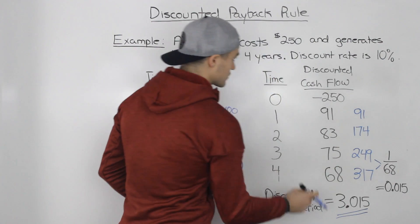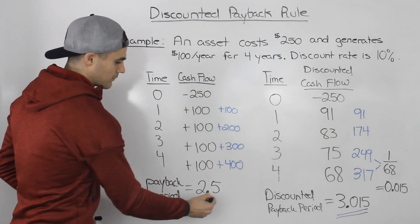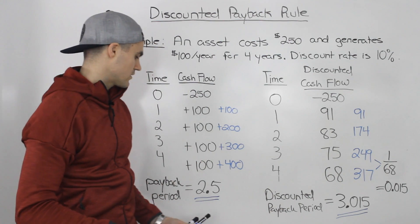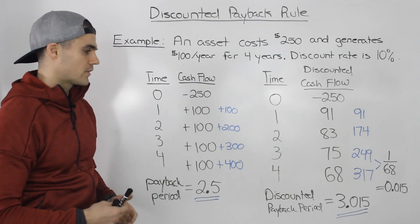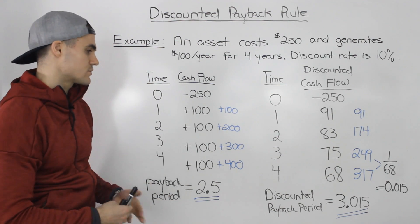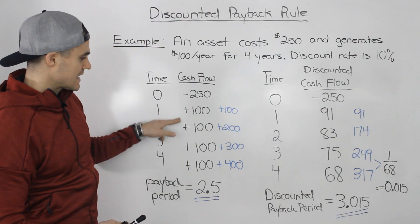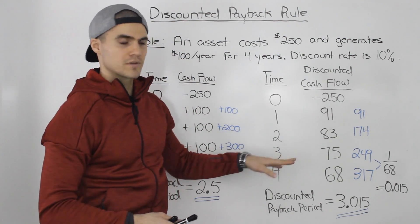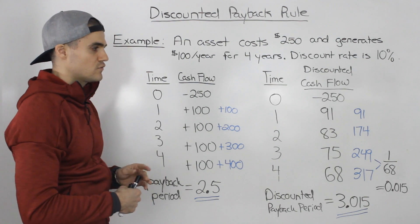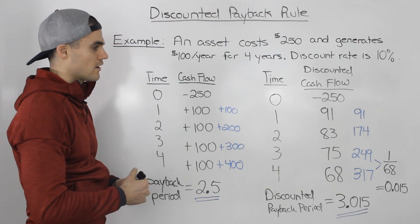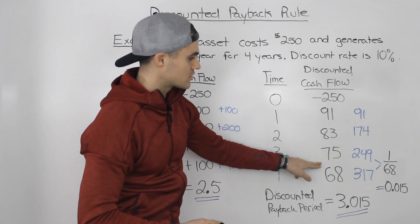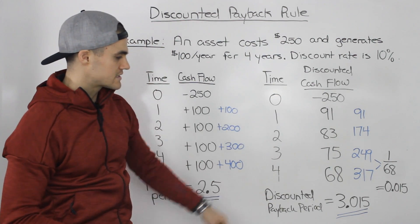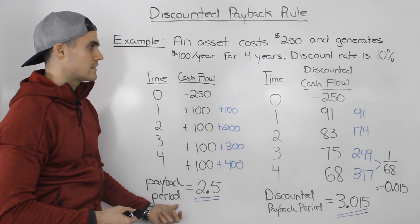So our answer is 3.015 years, compared to a payback period of 2.5 years. The discounted payback period is always going to be greater than or equal to the payback period. When you discount these cash flows, the values in the discounted column are smaller — because the present value is always smaller than the future value, assuming positive interest rates. With smaller cash flows to work with, it takes longer to recover that initial investment.